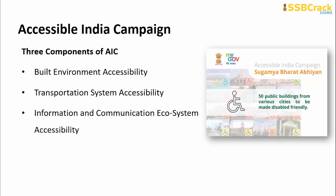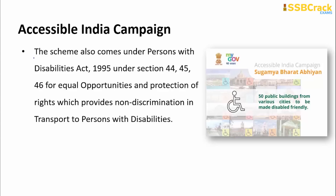Under this campaign, there are three components of accessibility. First is built environment accessibility. Second is transportation system accessibility. Third is information and communication ecosystem accessibility. The scheme also comes under the Persons with Disabilities Act 1995, under sections 44, 45, and 46, for equal opportunities and protection of rights, which provides non-discrimination in transport to persons with disabilities.